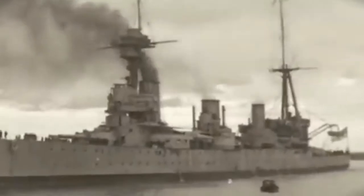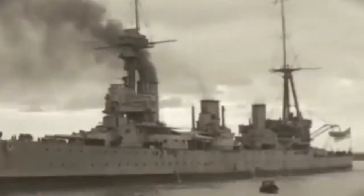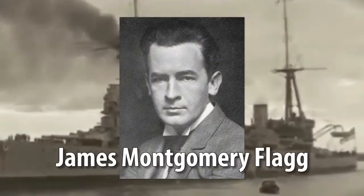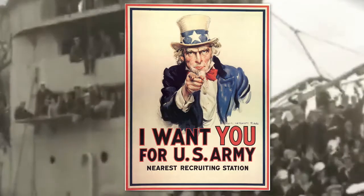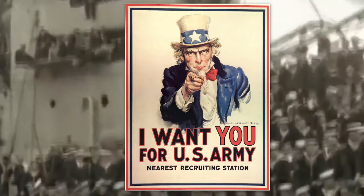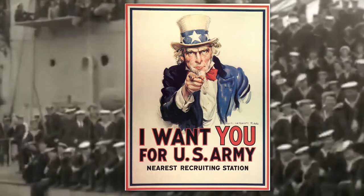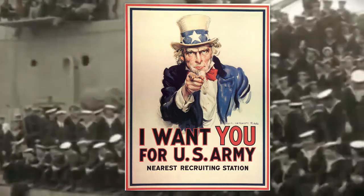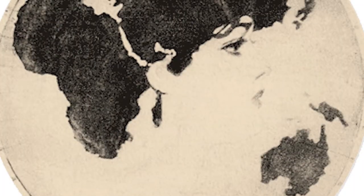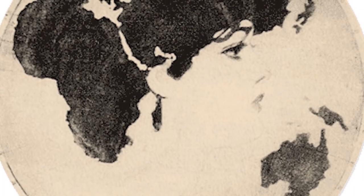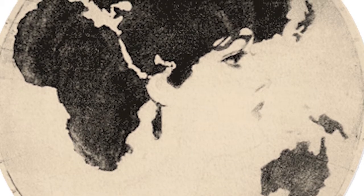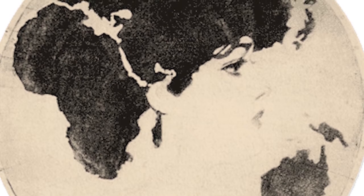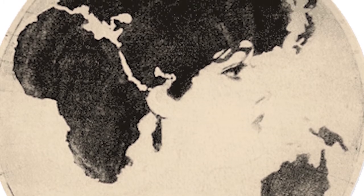This other image is from 1913. It was made by James Montgomery Flagg, the artist who created the image of Uncle Sam with a finger pointing and a slogan saying, 'I want you.' This image, which was published as a postcard, is called Map of the World. It looks like a globe with some countries, but if you look again, you will see a girl's face hidden within the globe. That's your rods and cones working right there.